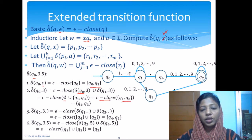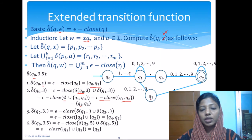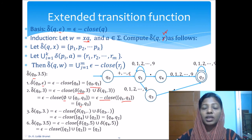The epsilon closure of q₁ is {q₁} using the basis, since there is no epsilon transition from q₁. The epsilon closure of q₃ is {q₃} since there is no transition upon the null string from q₃. So delta-cap(q₀, '3') = {q₁, q₃}.